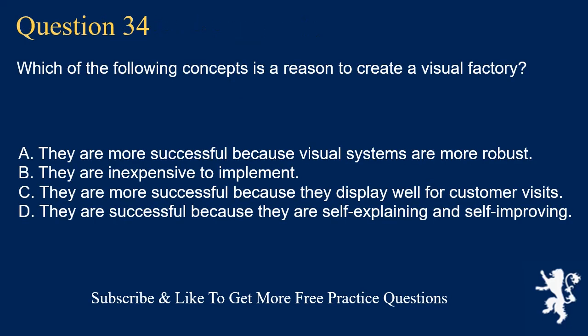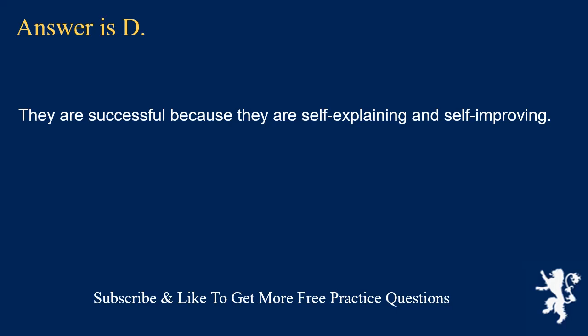Question 34. Which of the following concepts is a reason to create a visual factory? A. They are more successful because visual systems are more robust. B. They are inexpensive to implement. C. They are more successful because they display well for customer visits. D. They are successful because they are self-explaining and self-improving. Answer is D. They are successful because they are self-explaining and self-improving.